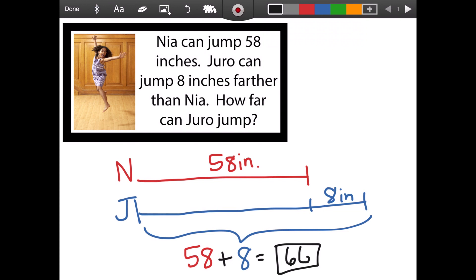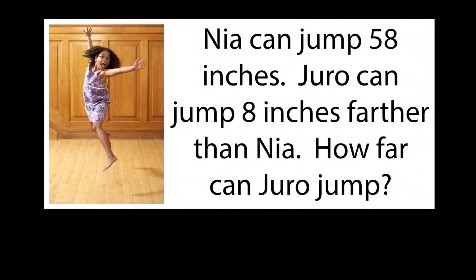58 plus eight to equal our answer. That would be 66. Nia can jump 58 inches. Juro can jump eight inches farther than Nia. So 58 plus eight equals 66.